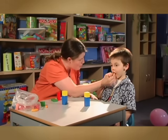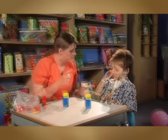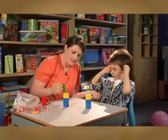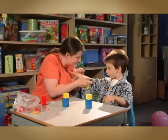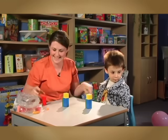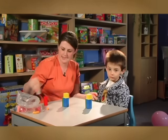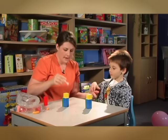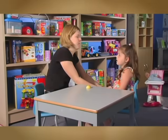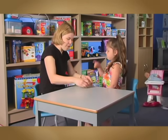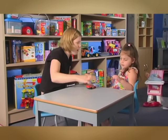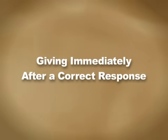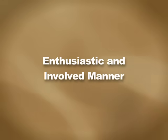First, reinforcement must immediately follow a correct response. Reinforcement is given whether the child responds independently or with the help of a prompt. The second principle of reinforcement is that it should be enthusiastic and involved — if you are excited and enthusiastic when delivering the reward, the child will enjoy the reinforcement more, and that will lead to better learning. Lastly, reinforcement should be varied. If the same stale rewards are used all the time, they will lose their effectiveness. Remember: effective reinforcement is best achieved if given immediately after a correct response, delivered in an enthusiastic and involved manner, and varied.